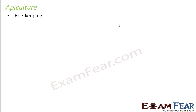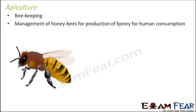Apiculture is nothing but beekeeping — the maintenance of beehives created by honeybees in order to get honey. It is the management of honeybees for production of honey for human consumption. Honey is extremely useful; it has a lot of medicinal uses and is used in several food recipes. Honey has very high nutritive value, which is why it is so important.